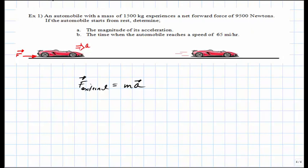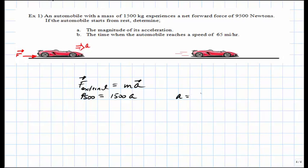Applying Newton's second law: the force equals 9,500 N, the mass is 1,500 kg. Dividing both sides by 1,500, the acceleration equals 6.333 meters per second squared.